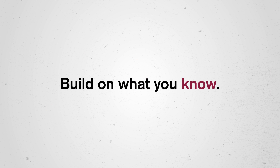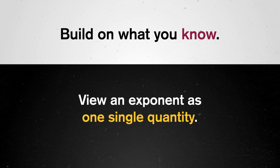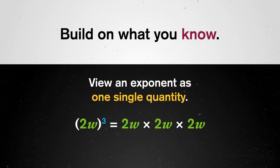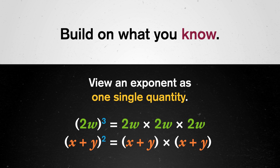So in class or in life, if you feel stuck on an exponent problem, here's what you can do. If you blank on one of the rules and can't look it up, think about the powers of two or even folding paper. Build on what you know by taking the problem and trying something similar with numbers you're familiar with. It can be helpful to view an exponent as one single quantity raised to a power — for example, 2w cubed is 2w multiplied by itself three times, and x plus y squared is x plus y multiplied by itself. Next time, we'll look at logarithms, which take what we can do with exponents up a notch.